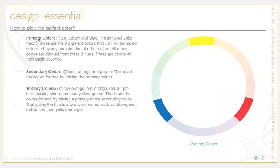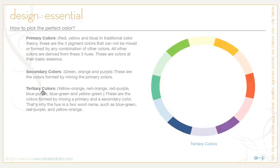These are colors at their most basic essence. The secondary colors are green, orange, and purple — the colors formed by mixing the primary colors. The tertiary colors are yellow-orange, red-orange, red-purple, blue-purple, blue-green, and yellow-green. These are the colors formed by mixing a primary and a secondary color.